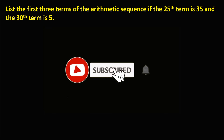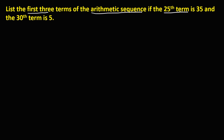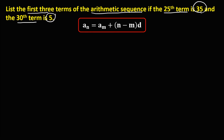Let's solve this problem. List the first three terms of the arithmetic sequence if the 25th term is 35 and the 38th term is 5. Since there is no given first term, we're going to use this formula: a sub n equals a sub m plus the quantity of n minus m times the common difference, where n is greater than m.